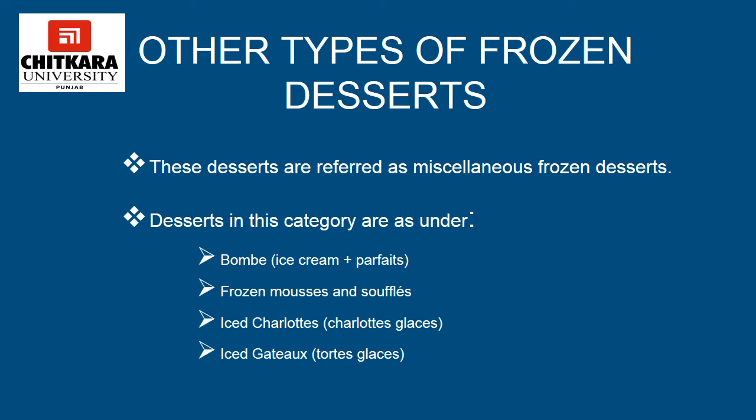Frozen mousses are light frozen desserts containing whipped cream. Although they are similar in character due to their whipped cream content, the bases are made in several ways: mousse with Italian meringue, mousse with syrup and fruit base, and mousse with custard base. The mixture for bomb and parfait can also be used for mousses. The simplest method for serving mousse is to pour the mixture into individual servings and freeze them. The mixture can also be poured into molds, and after unmolding, cut into portions and decorated with whipped cream, fruits, cookies, or other items.